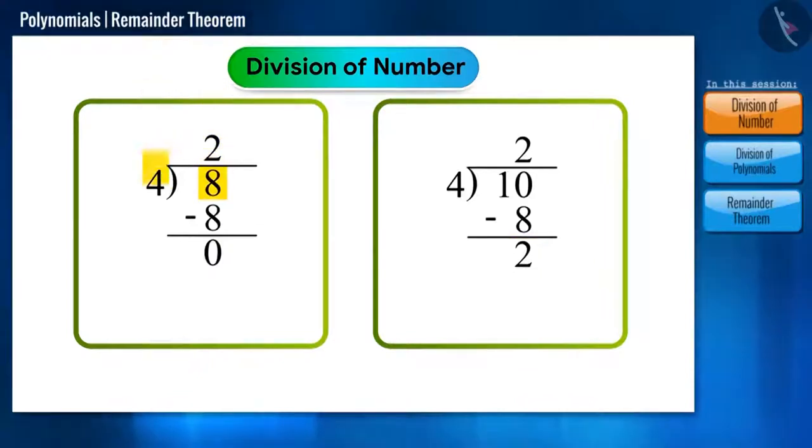For example, if we divide 8 by 4, we get the remainder as 0. Whereas, if 10 is divided by 4, the remainder is 2.